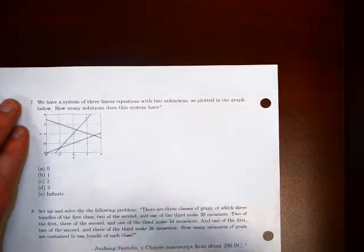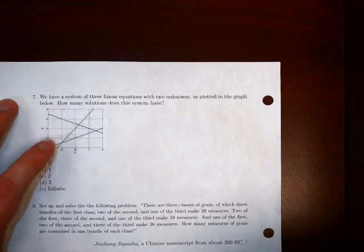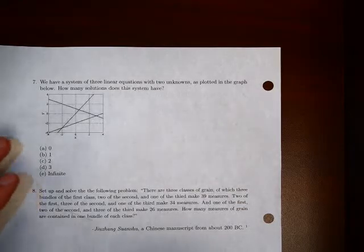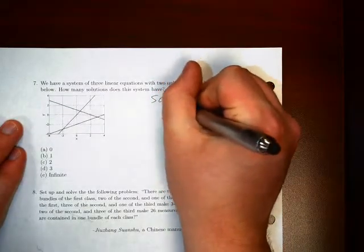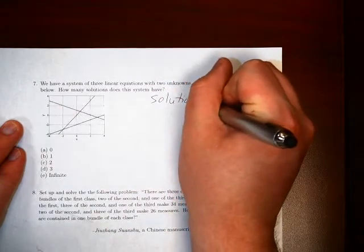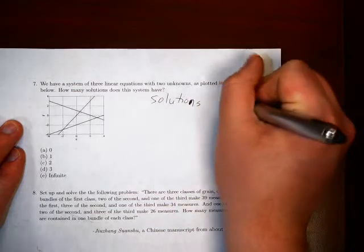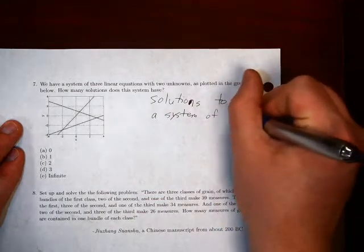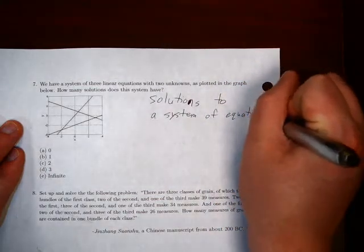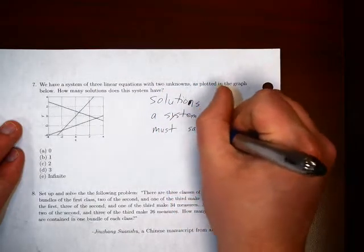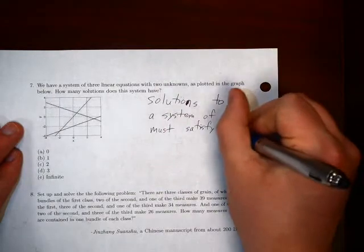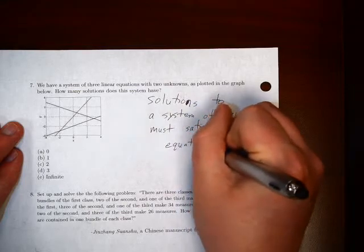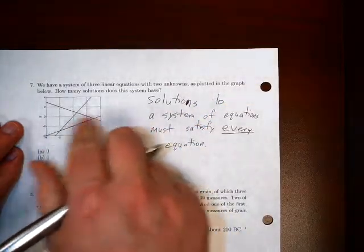Alright, so let's say we've got a system of three linear equations as plotted on this graph. And there's two variables for each of them, x and y. We want to know how many solutions this system has. Well, solutions to a system of equations must satisfy every equation. So in other words, we're looking for a point here that shows up on all three of our lines.